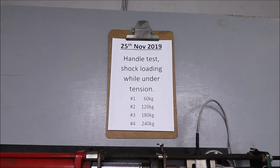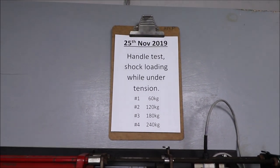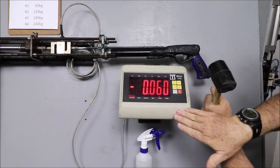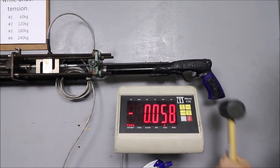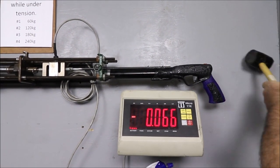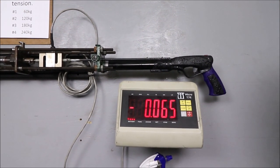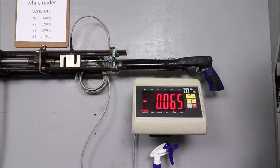The first setting will be equivalent to a single 16-mil rubber, 60 kgs.